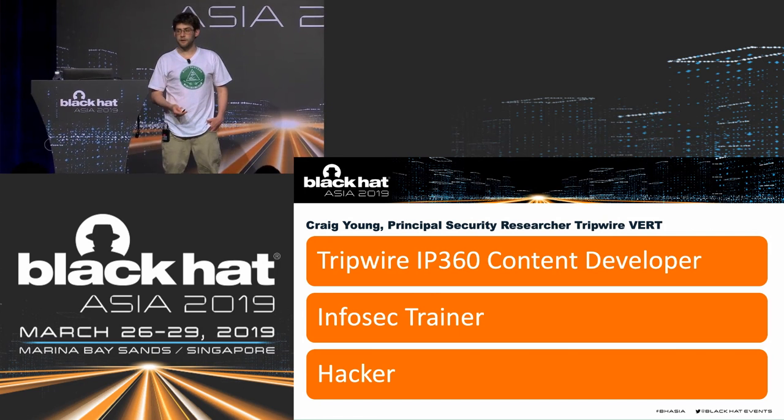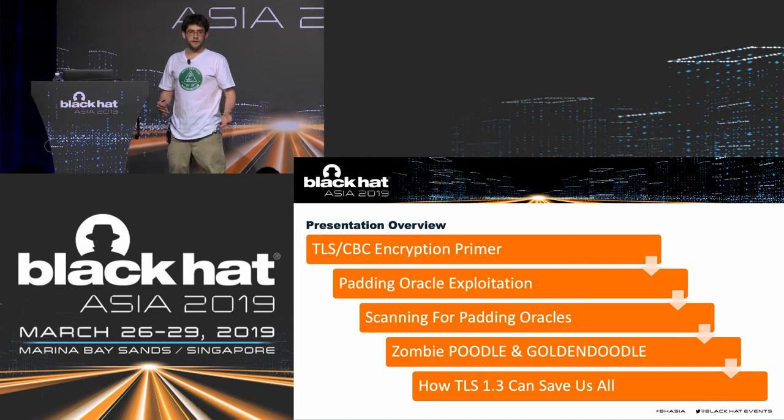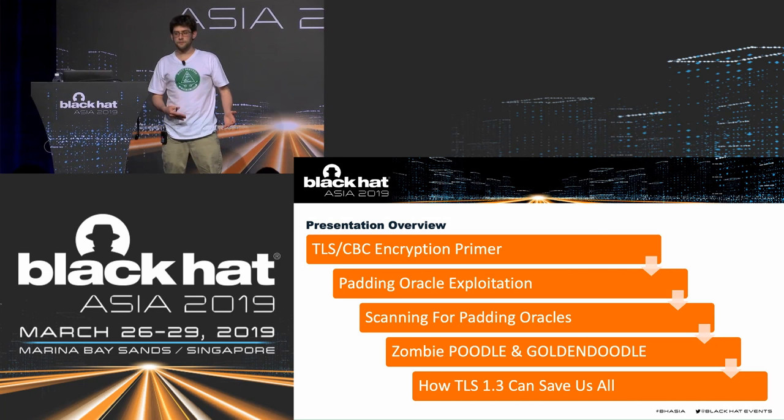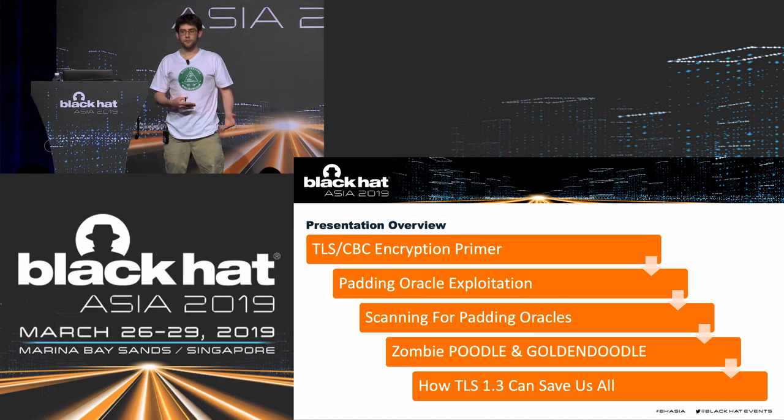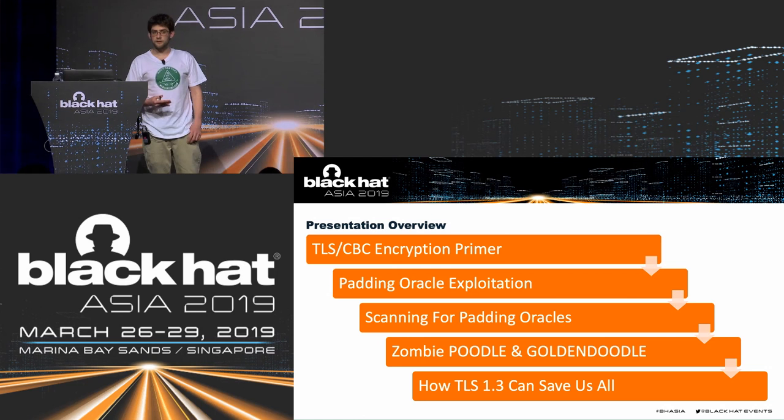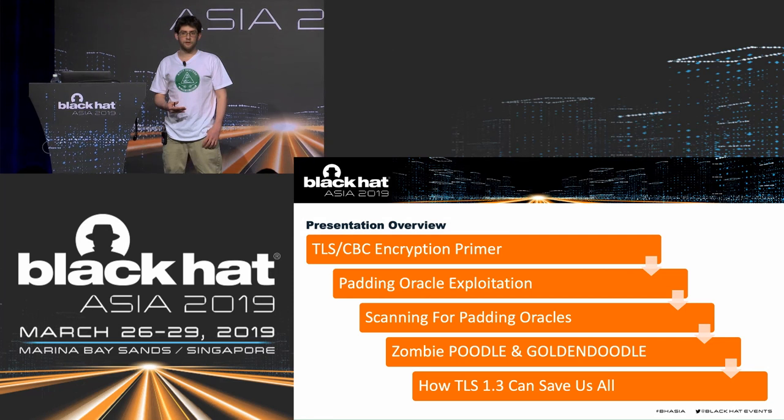So what we'll talk about here: I'm going to go over a little bit of the basics of how TLS works and CBC mode encryption specifically. We'll look at how padding oracles get exploited, how to scan for padding oracles, and specifically how I was able to make my own tool for scanning for padding oracles that were previously unknown. We'll then go over some of the findings, including Zombie Poodle and Golden Doodle, and wrap it all up by telling you how TLS 1.3 is going to be your savior.